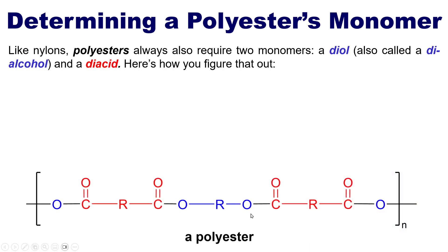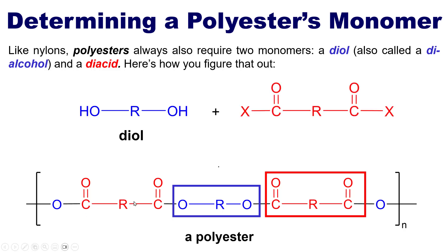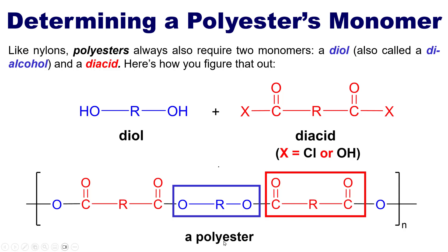To identify polyester monomers, draw the polyester structure, then look at the two oxygens and whatever carbon or carbonyl groups are between them and box those. Pull that piece out and add a single H to each end — that is the diol, or di-alcohol. Separately, box the two carbon-oxygen double bond groups tethered by some carbons, pull that out, and place an X on each end. X is again either chlorine (giving a diacid chloride) or OH (giving a diacid). So the full answer includes three possibilities: the diol, the diacid chloride, and the diacid itself.